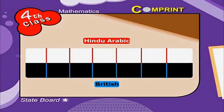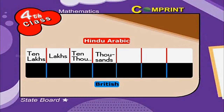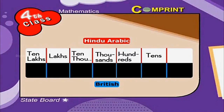Look at the table. In the Hindu-Arabic system, the place values are: ten lakhs, lakhs, ten thousands, thousands, hundreds, tens, and units.